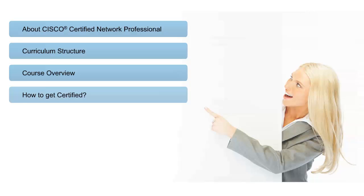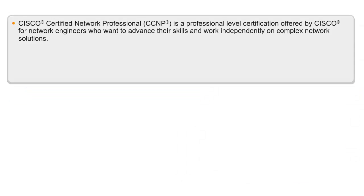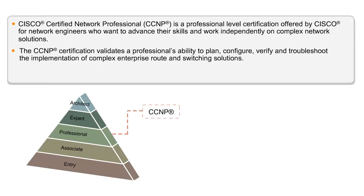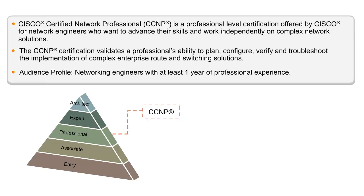What is CCNP? CCNP is a certification offered by Cisco for network engineers who want to advance their skills on complex network solutions. As seen from the pyramid, CCNP is a professional level certification associated with a strong ability to plan, configure, verify, and troubleshoot the implementation of complex network solutions. Since Cisco is a standard in the market, with other vendors developing devices modeled on Cisco devices, a CCNP goes a long way in establishing a professional's competencies across a wide spectrum of network infrastructure.